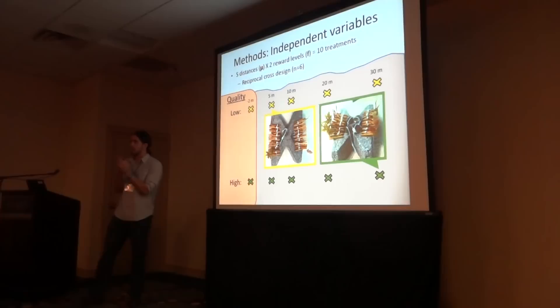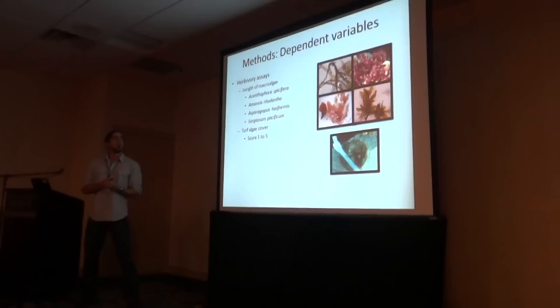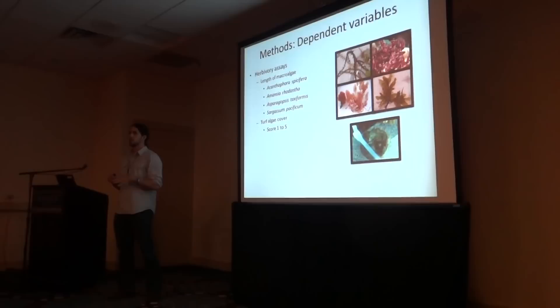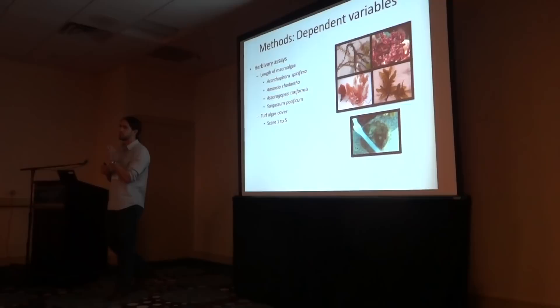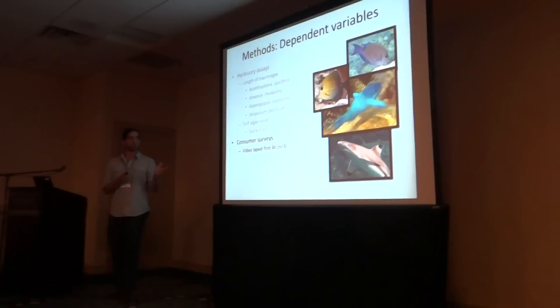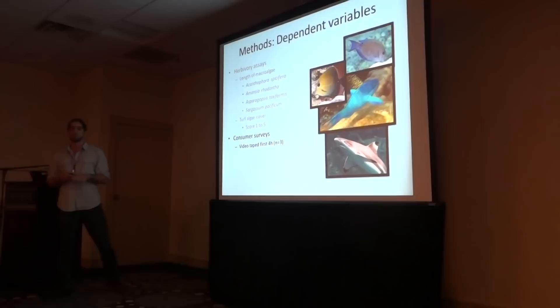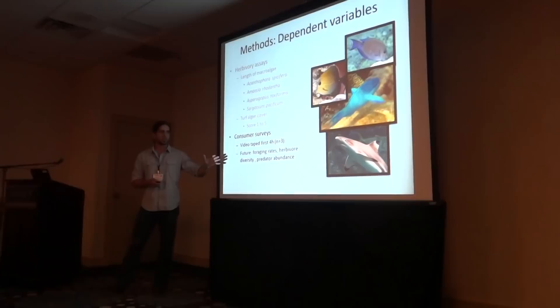This resulted in a ten-treatment design. At each site, a given array received a low-reward deployment and a high-reward deployment in random order — crossed reciprocally — leading to a sample size of six. Our response of interest was herbivory. We used both length of macroalgae and turf algae cover loss as our responses. We used four species of common and palatable macroalgae at a set initial length, measured the change in length over time. We also collected cores from damselfish territories with 100% turf cover, then quantified relative loss of turf over time — returning after 24 hours to measure macroalgae length and turf loss. We also captured consumer surveys via videotape, recording each array for the first four hours of deployment. The hope is to get foraging rates, herbivore diversity, densities, and predator abundance from these videos.